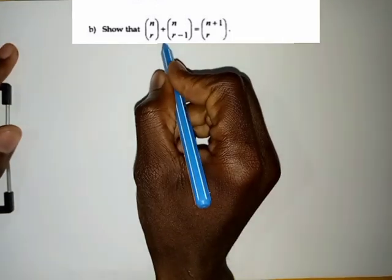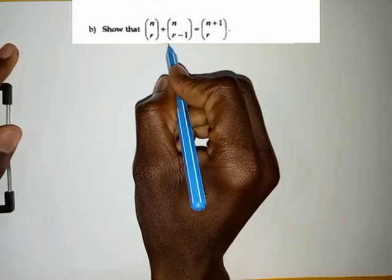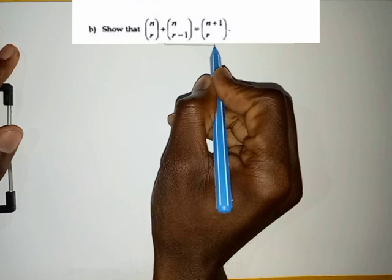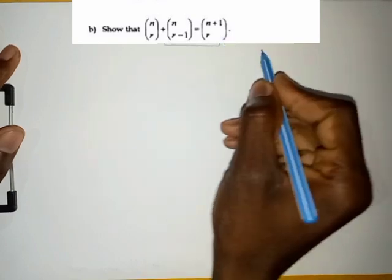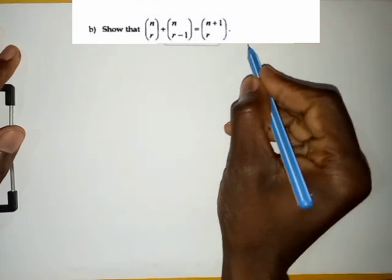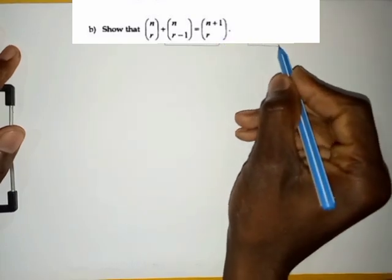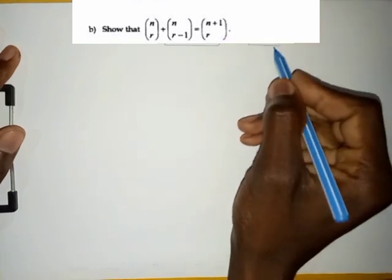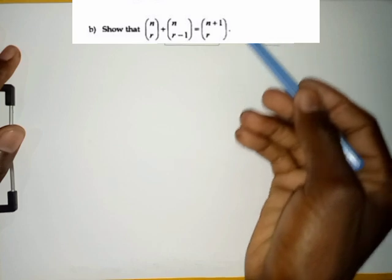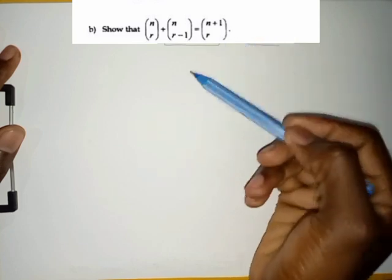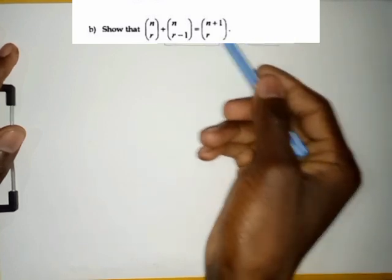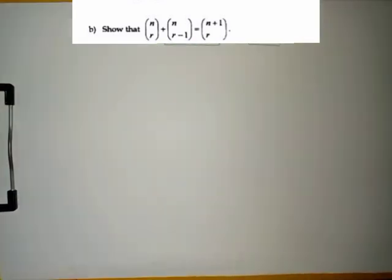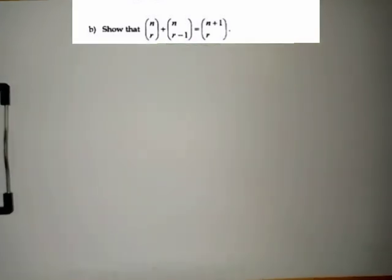I'll start by doing what I have on my left hand side, then I'll come to what I have on my right hand side. If you know what, I can even check what is happening on this part, then I'll come to what I have on the left hand side.